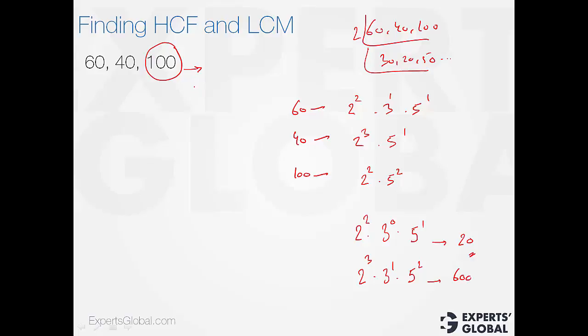So, to include 40 also, I need to multiply 100 by 2, it becomes 200 and then what does 60 bring that is not already there in 200? 60 brings an additional 3. 200 does not have a 3 as a factor in it. So, 200 needs to be multiplied by 3, the LCM is 600. So, that is the fast way of calculating LCM. Personally, I always do it like this.